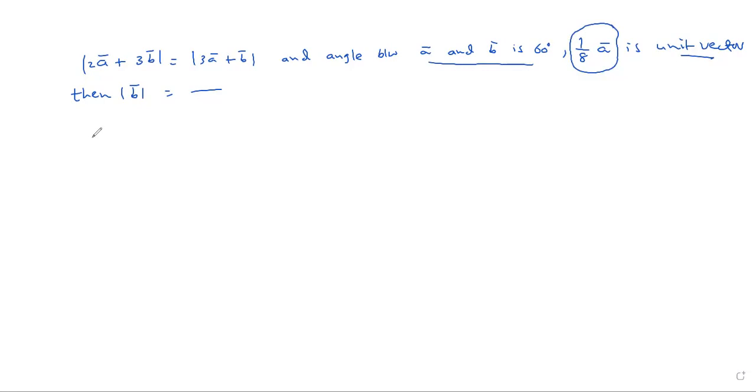So, what is the procedure? First, take the given expression: 2A bar plus 3B bar is equal to 3A bar plus B bar. Now, square on both sides.